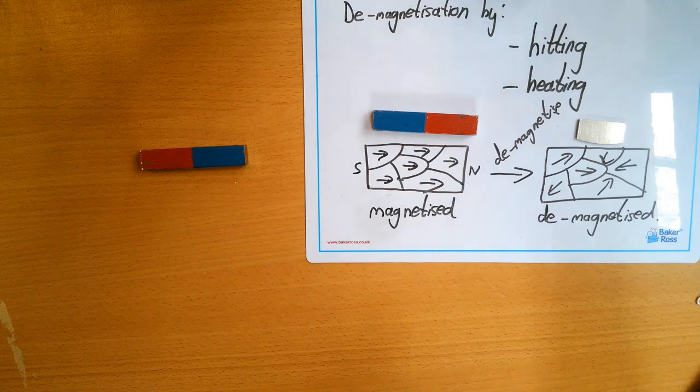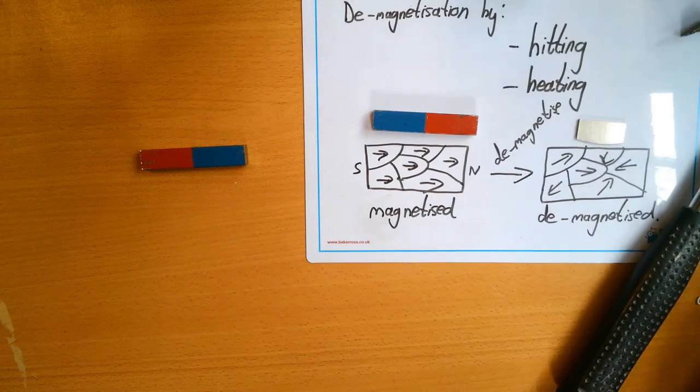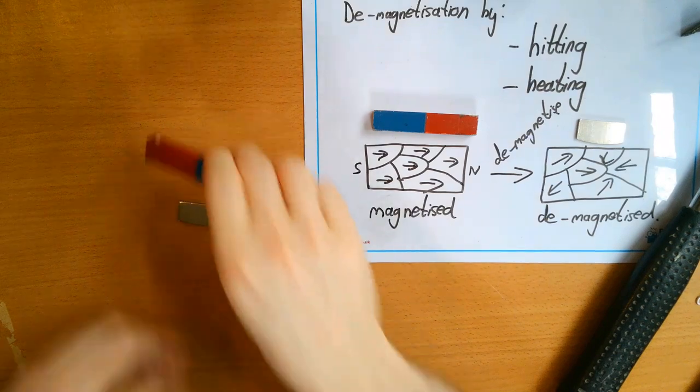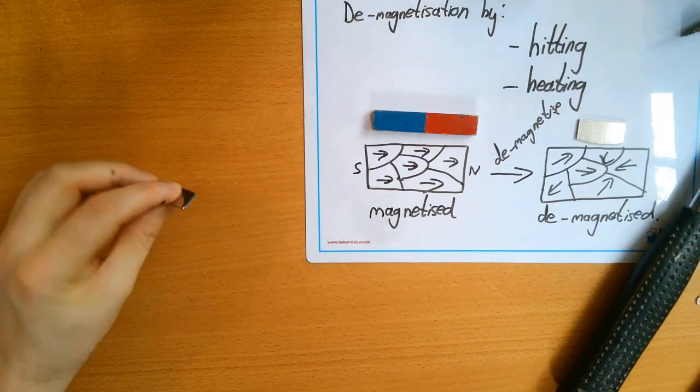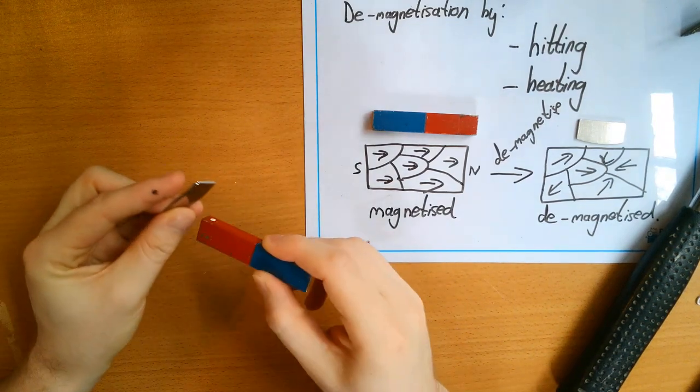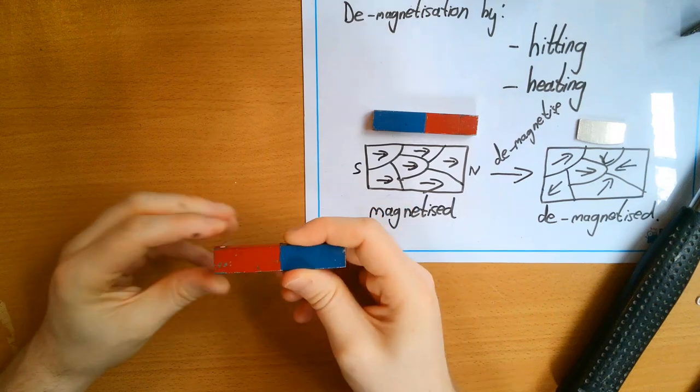that will cause it to demagnetize. And what I am happy to hit though, is if I take this piece of steel and I use the stroking method.